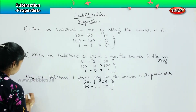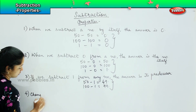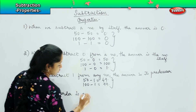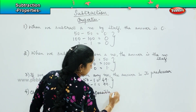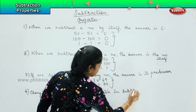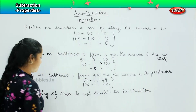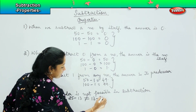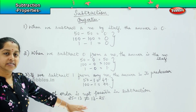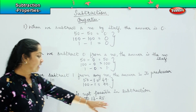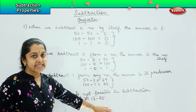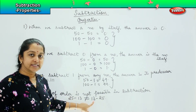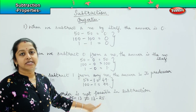And the last property is that changing of order is not possible in subtraction. This is not like addition where you can shuffle the order. For example, twenty-five minus thirteen is not equal to thirteen minus twenty-five. The answer obtained by twenty-five minus thirteen will not be the same as thirteen minus twenty-five. Because your minuend should always be the larger number and the subtrahend should be the smaller number. In this case, your minuend is a smaller number and your subtrahend is a larger number, so subtraction is not possible.